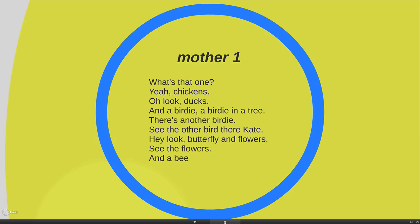Here's the first mother reading. What's that one? Yeah, chickens. Oh, look, ducks and a birdie. A birdie in a tree. There's another birdie. See the other birdie there, Kate. Hey, look, butterflies and flowers. See the flowers and a bee. Okay, it's quite cool. The mother is reading to the child. The child is learning the formal conditions of what it is to take verbal sounds and convert it into words themselves.